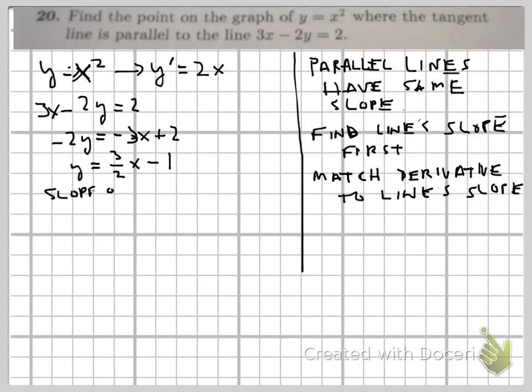If you remember y equals mx plus b form, the slope of the line is going to be 3 over 2. So these are the two pieces of information we need.